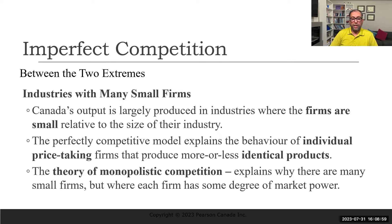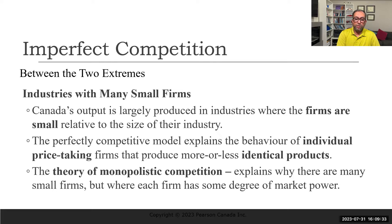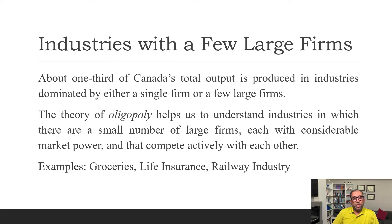In monopolistic competition, the key is that the firm has a degree of market power, obtained through product differentiation. Every firm has its own product that is different from others, and that's why they have some monopoly or market power over it. The theory of monopolistic competition explains why there are many small firms where each firm has some degree of market power.